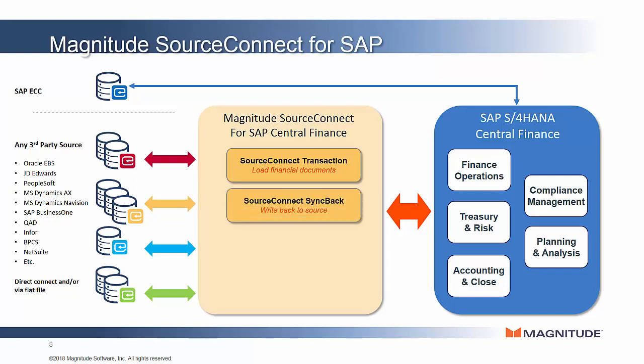The next module is Magnitude SourceConnect SYNCBAC. Companies using central finance only for reporting may not need this module, but those with the intention to use central finance as a shared service platform for financial operations will certainly want to consider it. In this case, central finance will be used to authorize payments, make adjustments, and so on, and users will have to decide if they want their source systems to reflect these changes. If they do, they will need the ability to synchronize this information back into the source systems from central finance, or many of the existing functions of the source systems will be compromised.